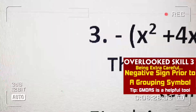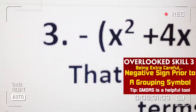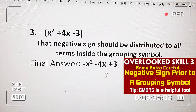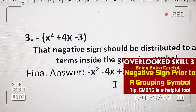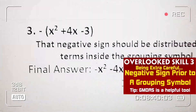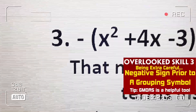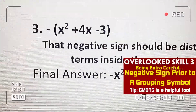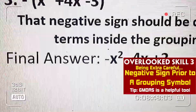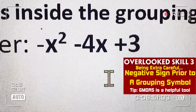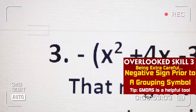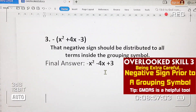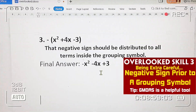Kasi kung may negative yan prior to the grouping symbol, talaga makaka-apekto yan. So yung negative sign dapat ma-distribute sa lahat ng terms — like x squared, 4x, negative 3. So the expected answer is this one — kasi nga na-distribute na yan, a-apekto talaga lahat ng terms nasa loob ng grouping symbol.